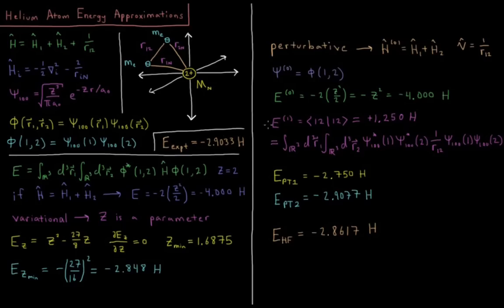So before we discuss these approximations, it's important to note that the experimental energy of the helium atom is negative 2.9033 Hartrees. So that is the energy of this system relative to this nucleus and these two electrons being infinitely far apart with zero kinetic energy. They prefer interacting with each other by this amount.